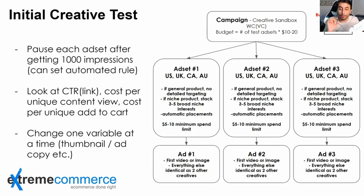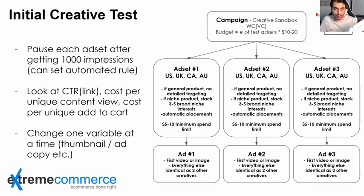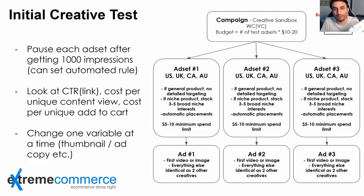Everything must be the same on every ad set — I cannot emphasize this enough. Don't change anything. In ad sets 1, 2, and 3, countries are the same, age brackets are the same. I keep automatic placements and one interest — all the same across all ad sets. When I come to the ad level, my ad copies are the same, my headlines are the same — everything is the same. Only one thing changes: the creative.